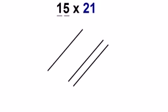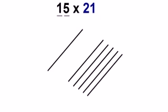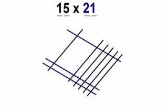We'll do another example. For 15 by 21, we start out by drawing one line. Then we'll leave a little bit of space and draw five lines. And the other number, we draw lines in the other direction. So we draw two lines here and one line here.